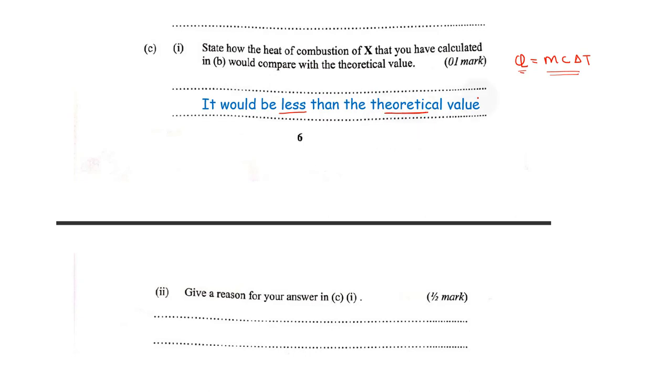So it would be less than the theoretical value because theoretical values usually we don't accept energy losses to the surrounding. So give a reason for your answer in C-Roman 1, some heat is lost to the surrounding. Not all the heat evolved goes to the water. Some might be lost to the equipment that we are using or the calorimeter or even just to the surrounding. So that's why we shall always have a less value because not all the heat energy given off from combustion of our X is absorbed by water. So the value obtained will tend to be less due to heat loss to the surrounding.